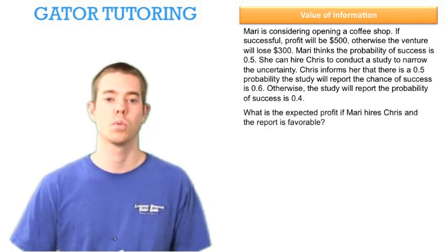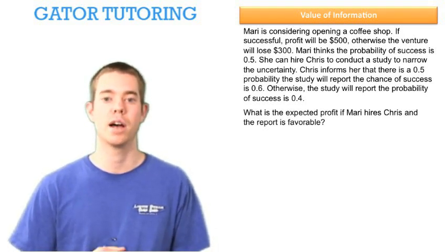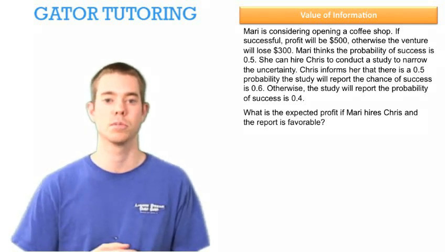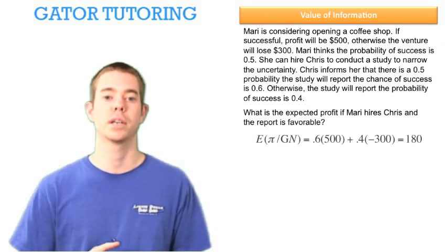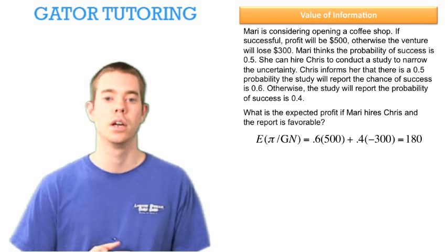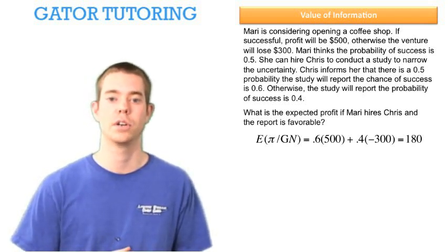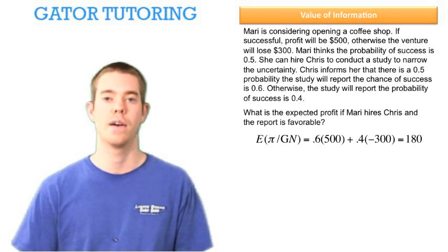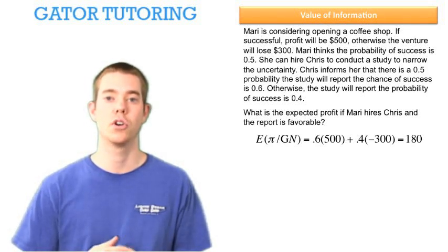So the first question asks, what is the expected profit if Mary hires Chris and the report is favorable? So we're looking for the expected profit given good news. Well that's the 60% chance we're going to have a successful year, plus the 40% chance we're going to have an unsuccessful year, and that's $180.